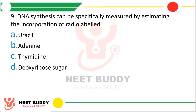Question 9: DNA synthesis can be specifically measured by estimating the incorporation of radiolabeled — which of the following four in radiolabeled form is used to estimate DNA synthesis? Option A: Uracil. Option B: Adenine. Option C: Thymine. Option D: Deoxyribose sugar. The correct answer is thymidine. Radiolabeled thymidine is used for estimating the amount of DNA synthesized.